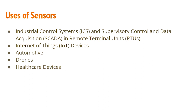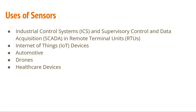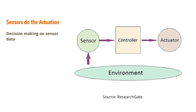Where are these sensors used? They're used in industrial control systems, ICS and SCADA systems, installed into the RTUs - remote terminal units. IoT devices use sensors too; you've seen smart devices with sensors. Automotive - electric vehicles are common these days and use sensors. Drones use sensors, and healthcare devices like medical infusion pumps are a great example. Sensors do the actuation: the sensor takes input from the environment, processes it, gives output to the controller, and then actuation happens.